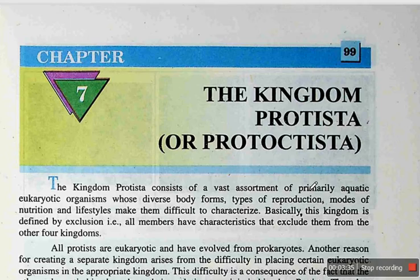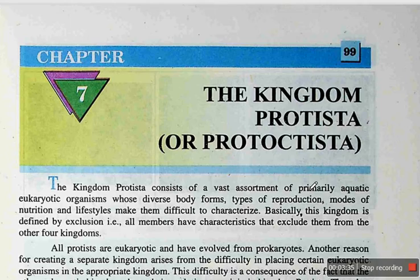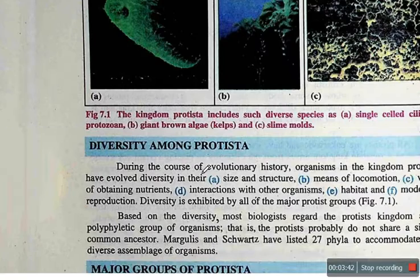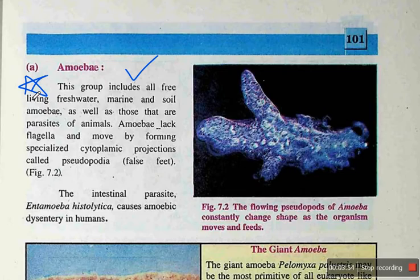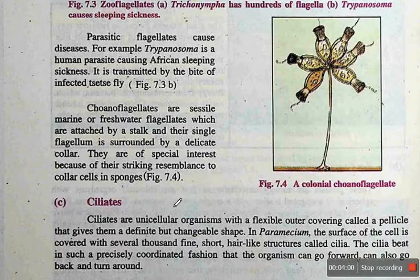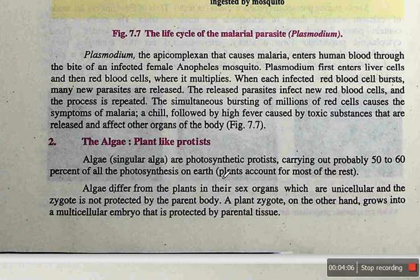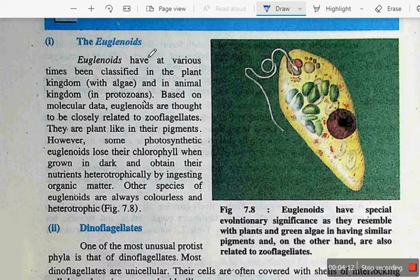Let's move on to Chapter 7, the Kingdom. The topics included are the major groups. The introduction is not included. The major groups are included — I will mark them. Several of these are important, and I will guide you about the most important questions side by side.